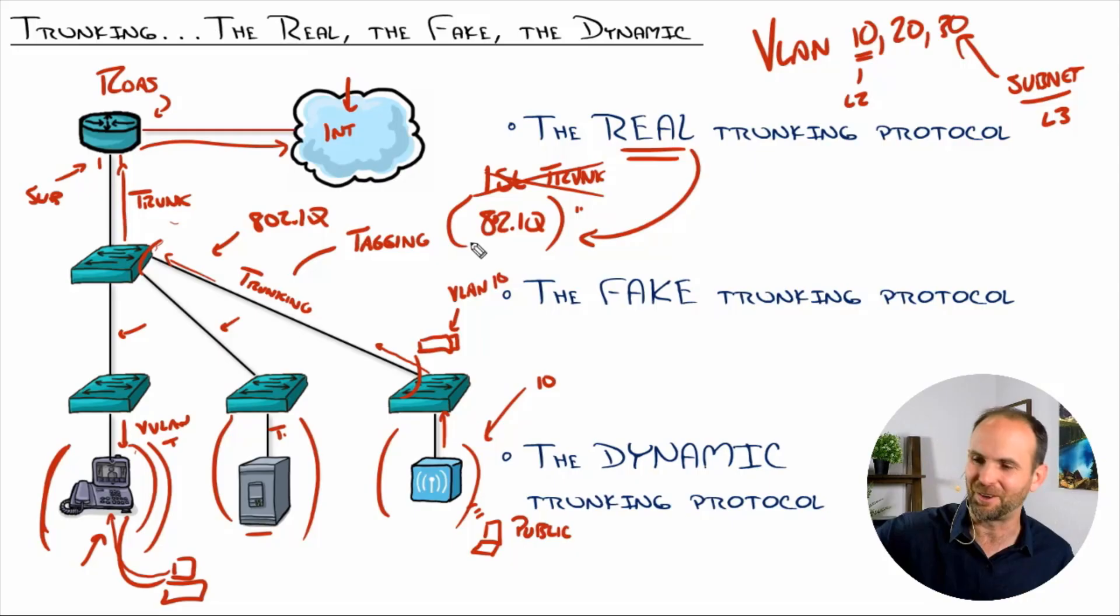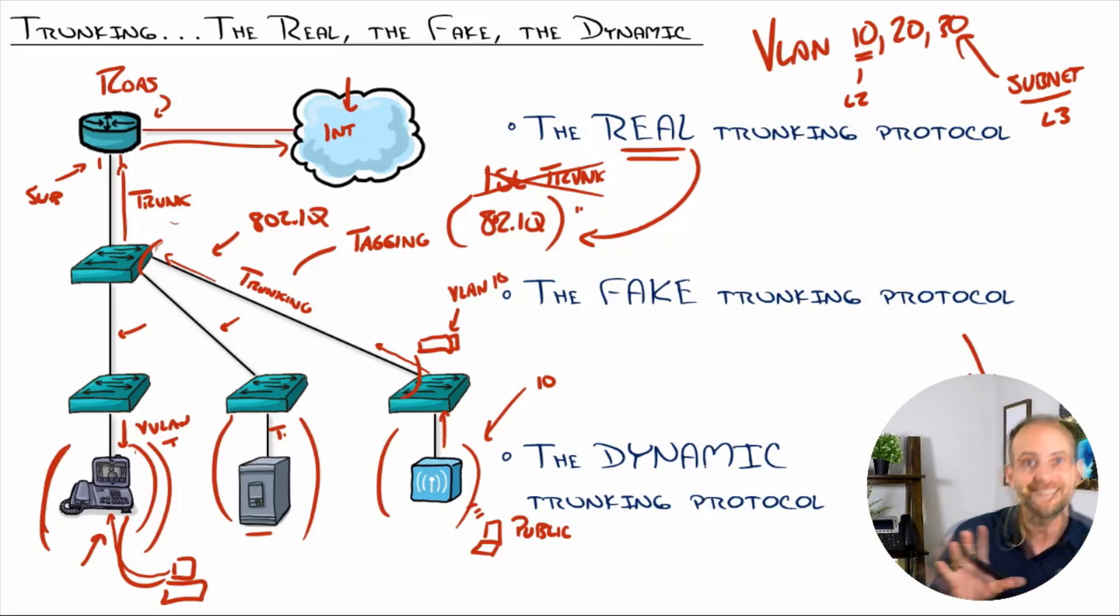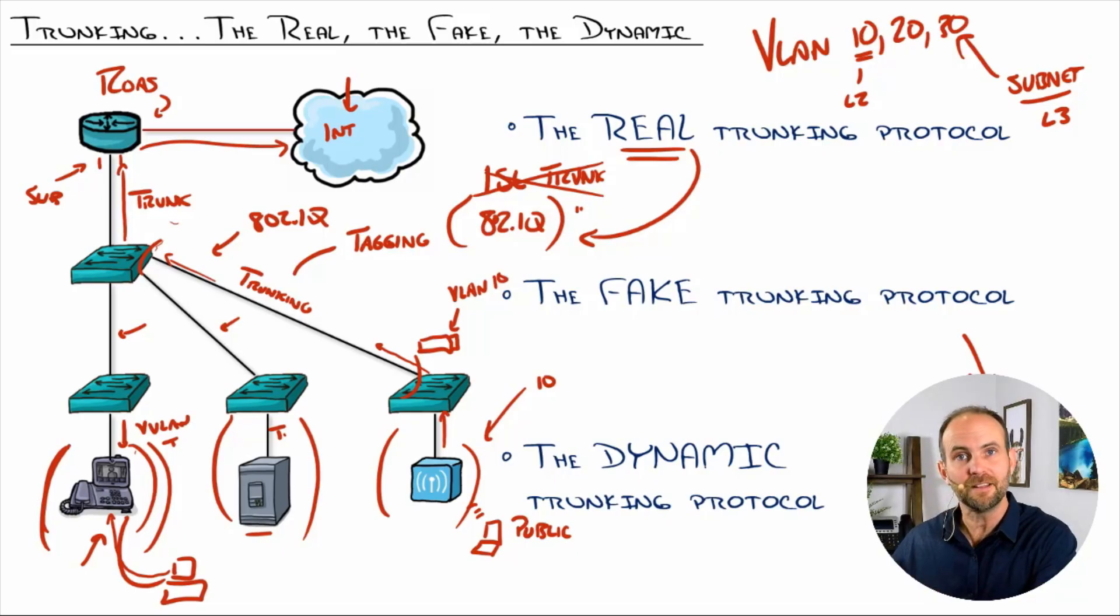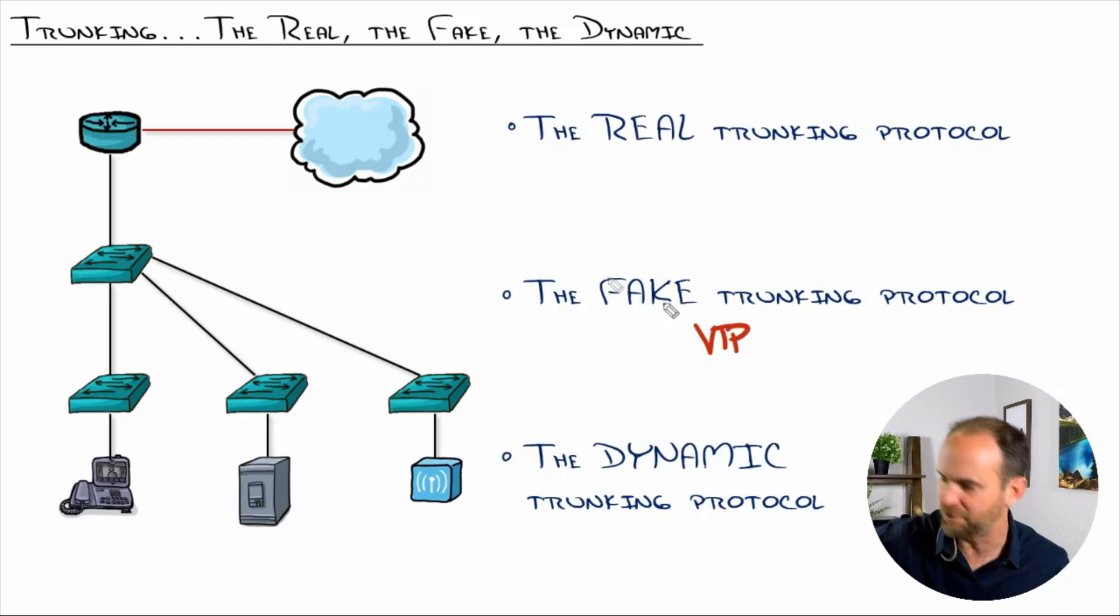The fake trunking protocol, some of you might remember, is actually called VTP. Cisco created this. They called it, unfortunately, the VLAN trunking protocol. How confusing is that? It should have been called the VLAN replication protocol because what it does is replicate VLANs between switches. So, take a look right here. Let me just clear all this off. I'll put VTP. It's the fake trunking protocol, right? As you create VLAN 10, 20, and 30 on whatever VLANs you want to create on those switches, instead of having to add them here and add them here and add them here, VTP can just go and replicate it, and this is where it gets its name, over trunk links.